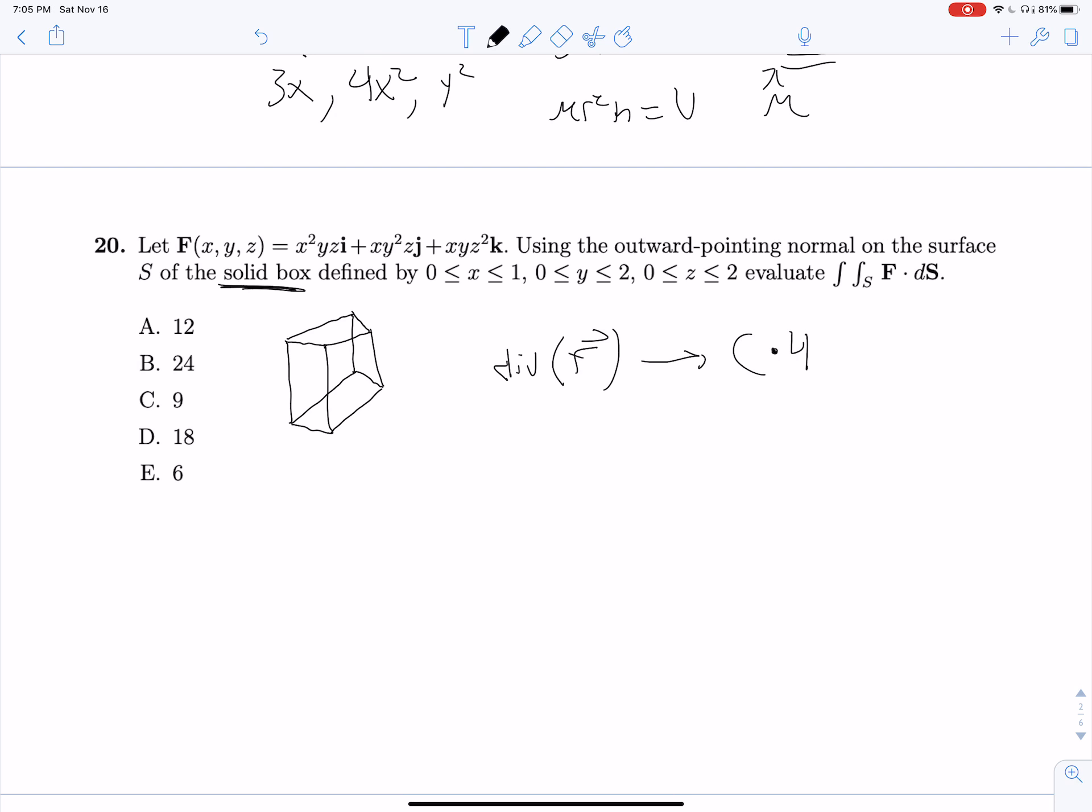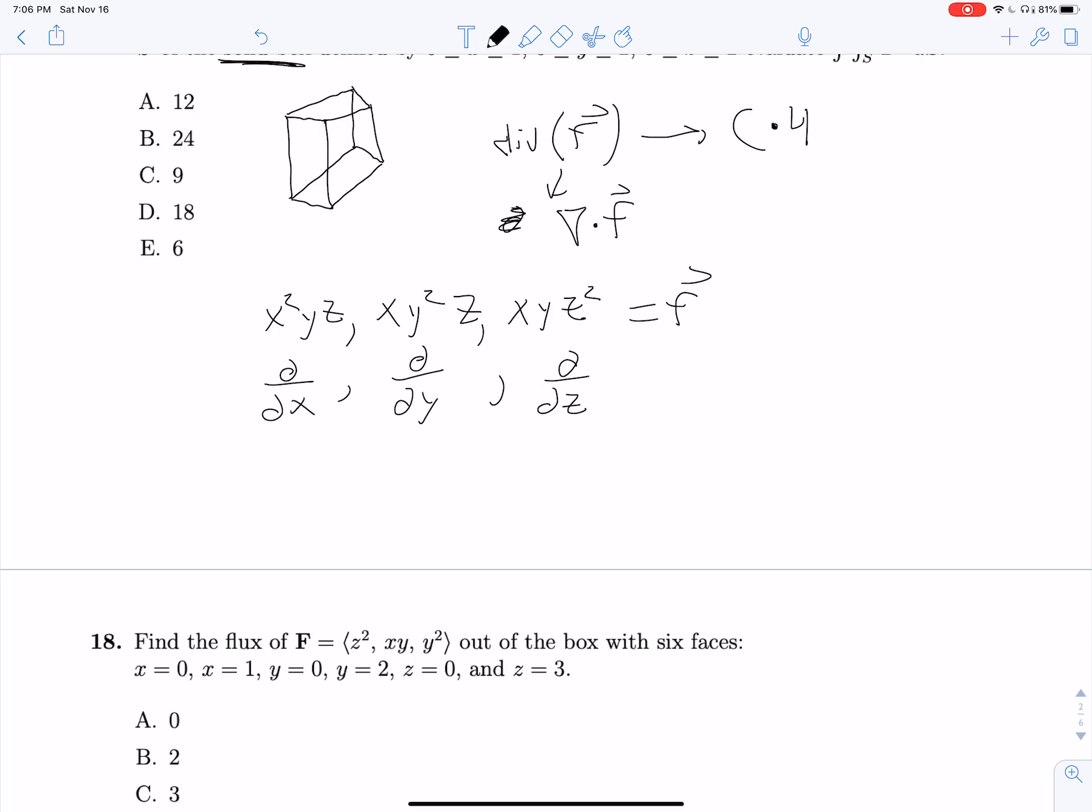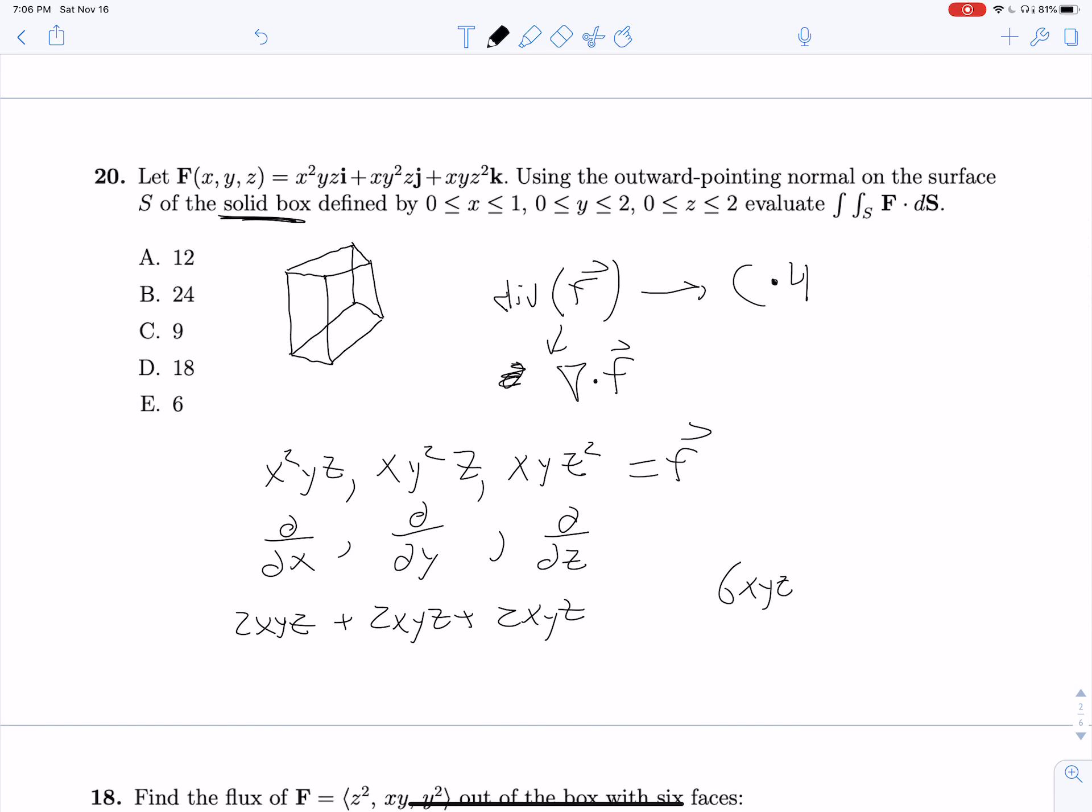So we know that the divergence of f is just going to be del dot f, which we can set up. x squared y z comma x y squared z comma x y z squared. All of that's equal to f, and then we know that del is partial partial x, partial partial y, partial partial z. And when we compute all this, we'll get 2x y z plus 2x y z plus 2x y z, which is going to be 6x y z.